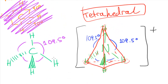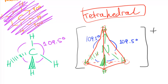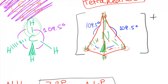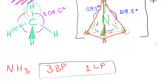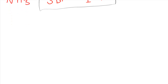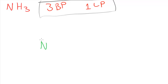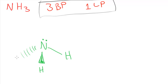Rather than the angles being all equal, there's an extra amount of repulsion from the lone pair. In drawing this, we'd have nitrogen with the lone pair of electrons, one hydrogen in the plane, another hydrogen pointing towards you on a wedge bond, and a dashed broken line for one hydrogen pointing away. This is what the structure of ammonia looks like.